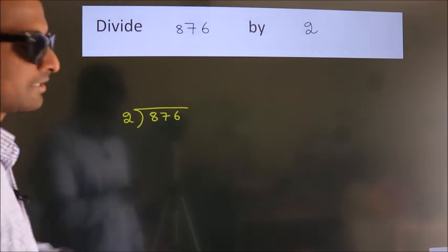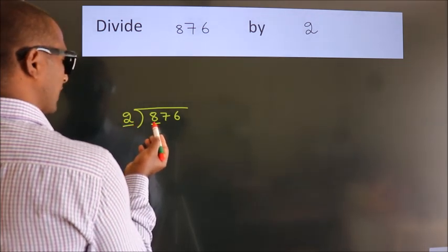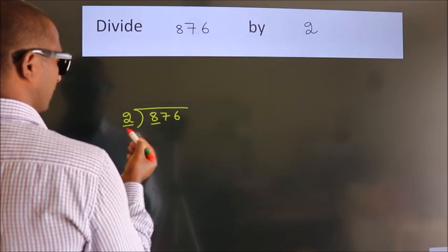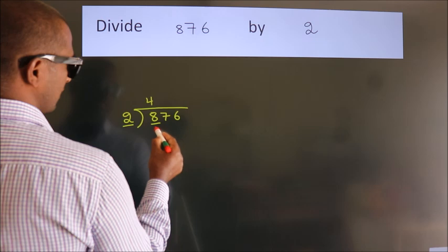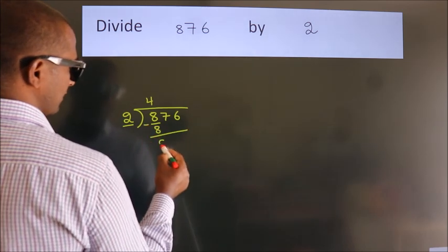Next, here we have 8, here 2. When do we get 8 in the 2 table? 2 fours 8. Now we should subtract. We get 0.